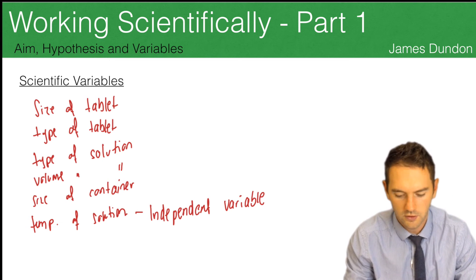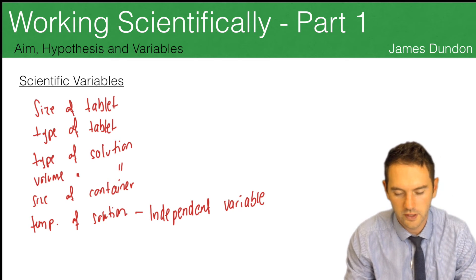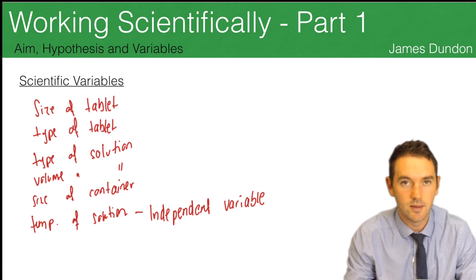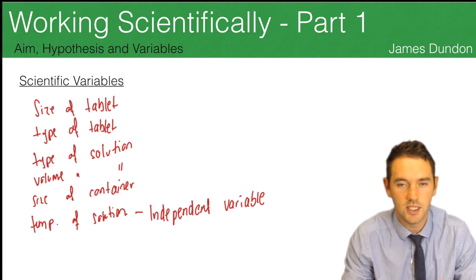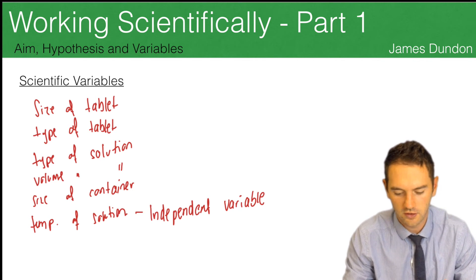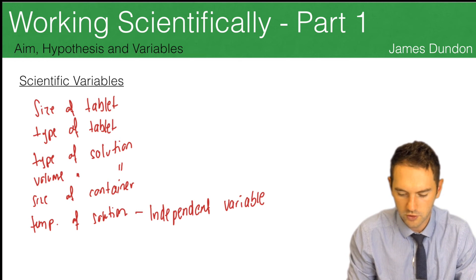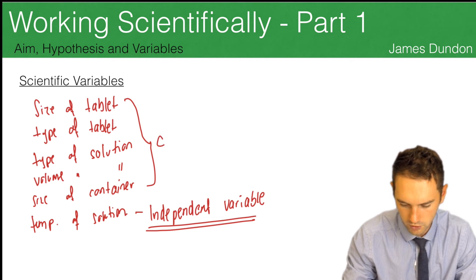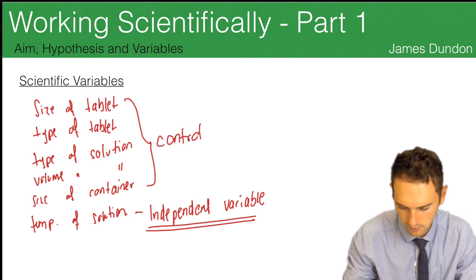Now because we know that all these other things might affect our experiment, we're going to keep them the same. So any change to the speed that the tablet dissolves is only due to our independent variable. Therefore all of these become control variables.